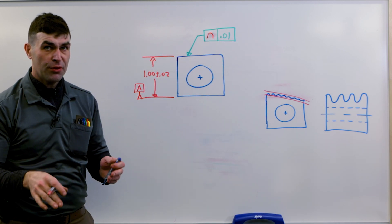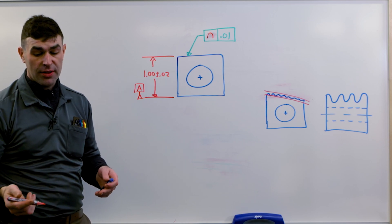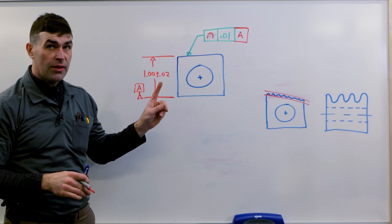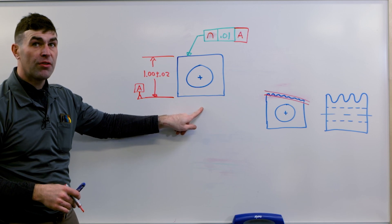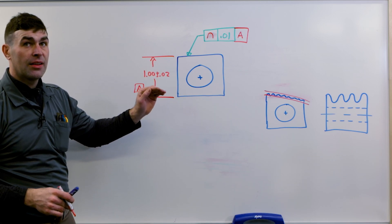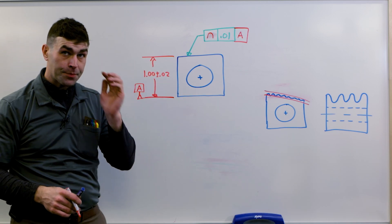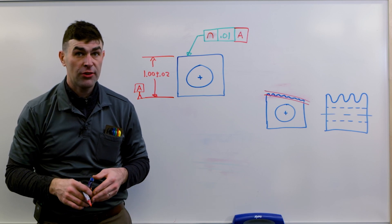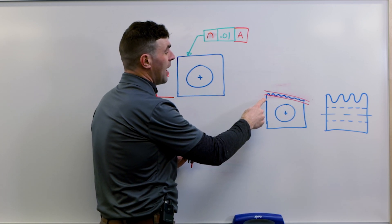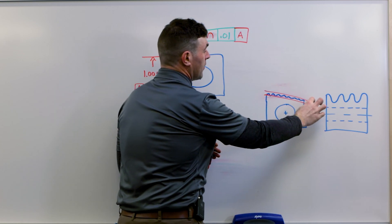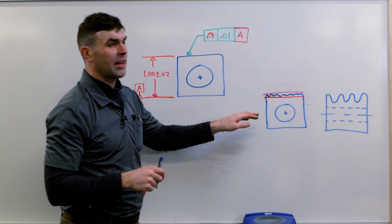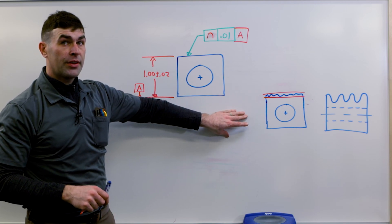Now what makes it different from straightness is we can use datum references. So if we reference datum A, the opposite surface, now we're going to be controlling the parallelism of each line segment. But just the parallelism. Recall parallelism or orientation never controls location. So we've got to be within, this tolerance zone has to be parallel to this bottom surface. Back to where we started.